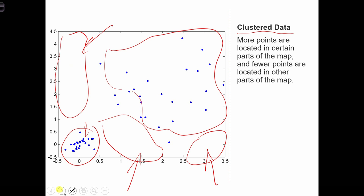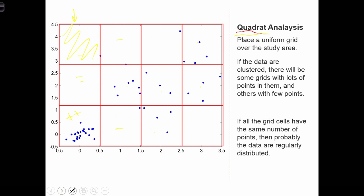And then when the data are random, we're going to find something in between. It's not going to be a lot of variation between quadrats, but it's not going to be perfectly even as well.